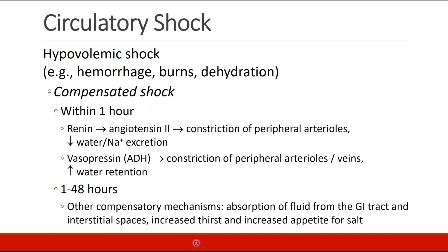Within an hour, the renin system is activated to release angiotensin II, which further constricts peripheral arterioles and decreases losses of sodium and water. Vasopressin, which is the antidiuretic hormone, will constrict peripheral arterioles and veins to further increase water retention. And over the next 48 hours, other compensatory mechanisms will kick in. There will be better absorption of fluid from the GI tract and interstitial spaces. Thirst receptors will be activated to increase fluid intake, as well as increased appetite for salt.